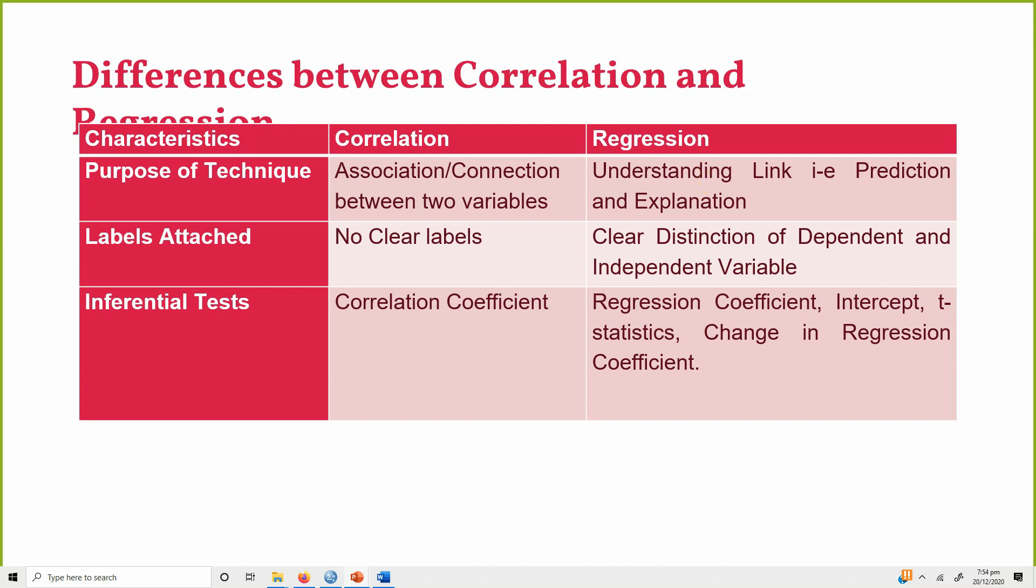explanation of the dependent variable based on a number of independent variables. Now, there is no label attached in correlation - there is no independent or dependent variable. Whereas in regression, there is a clear distinction of what your